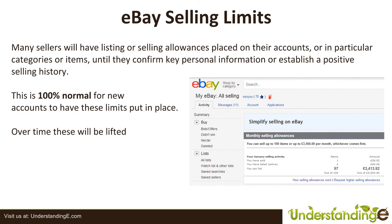eBay selling limits, for those who aren't familiar with the term, is basically an allowance that eBay puts on your account or in particular categories and items that you can list, until they either receive key personal information from you or your business, or whilst you build up a positive selling history. This is 100% normal for new accounts. We've got a screenshot from our account showing our selling limit of 100 items, and these allowances are split into two: either 100 items or £3,500 per month, whichever you hit first. Those limits go up over time, and once you've got a selling history with eBay they will relax these limits. It's there to protect not only you but also the buyers on eBay too.